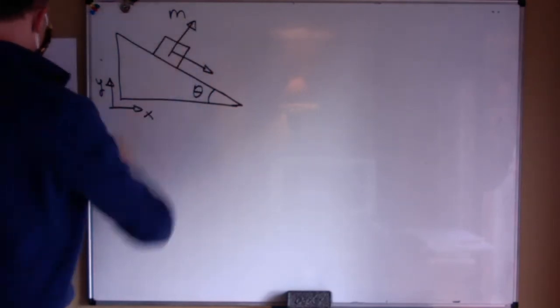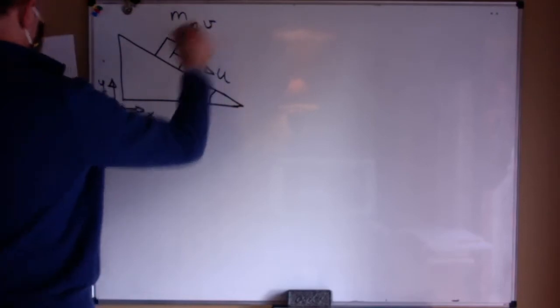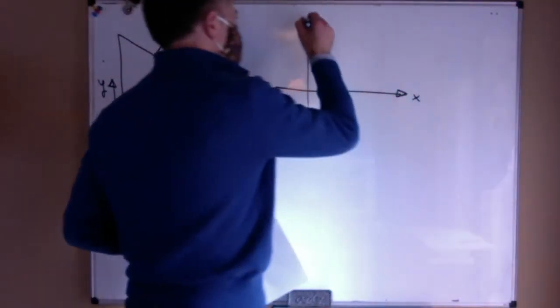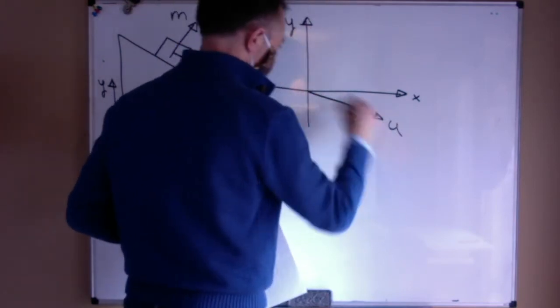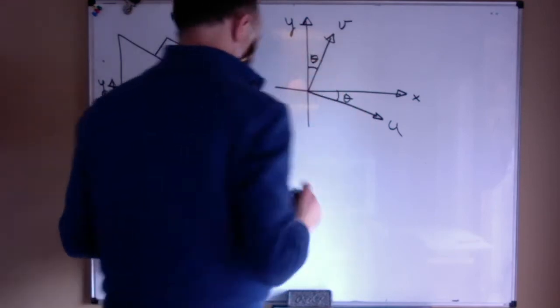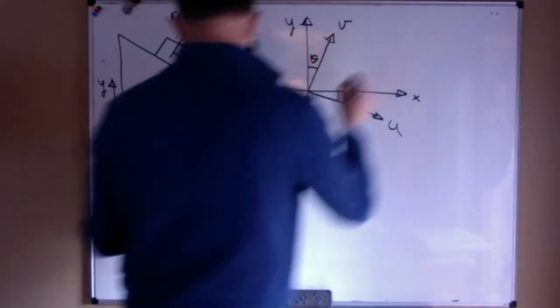Because the block moves along the incline, I will rotate my coordinates. Instead of using Cartesian coordinates x and y as horizontal and vertical, I will use Cartesian coordinates u and v oriented along the direction of motion and perpendicular to that one.